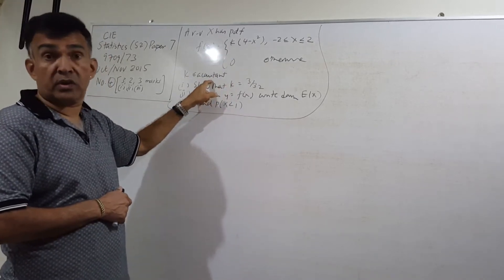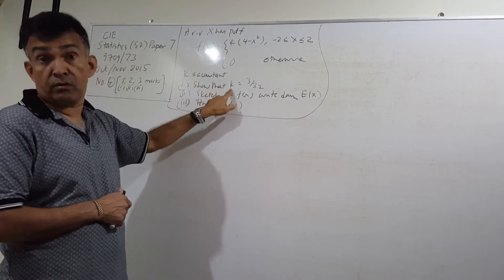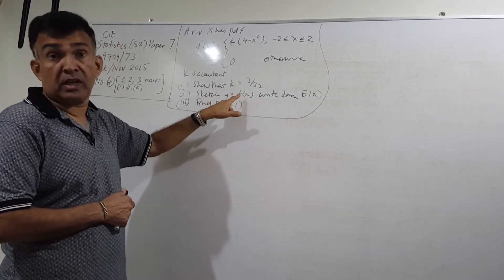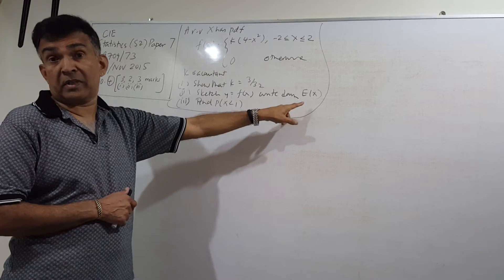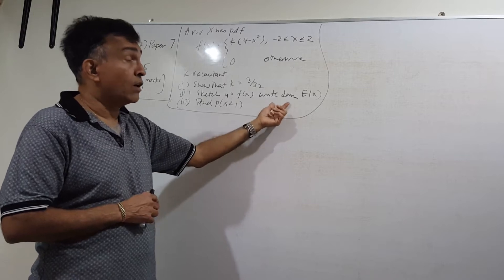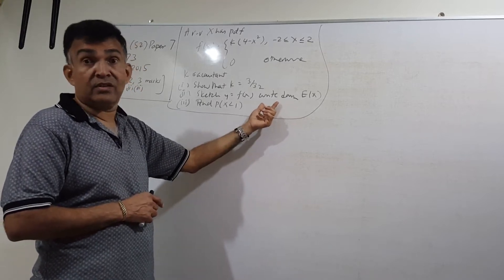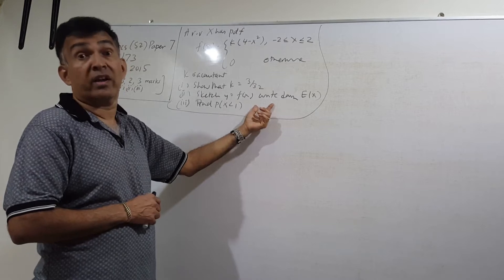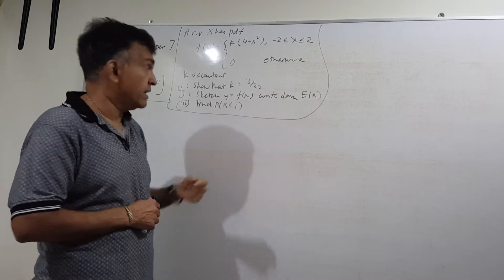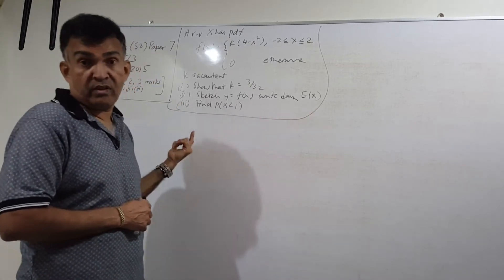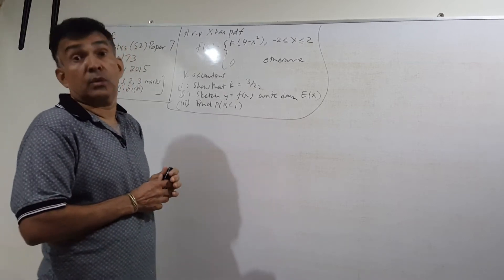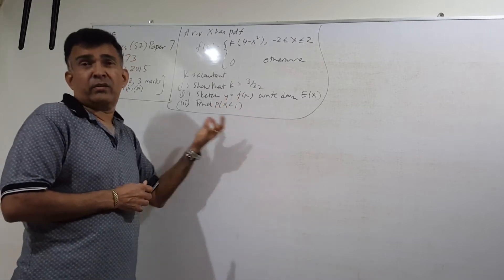K is a constant, and you are asked to show that K equals a certain value — that's part one. Then you are asked to sketch the PDF y equals f(x). Next, you are asked to write down the expected value of X — note it says 'write down,' so no working is required; you should be able to determine it by looking at the density function. Finally, you have to work out a probability using integration.